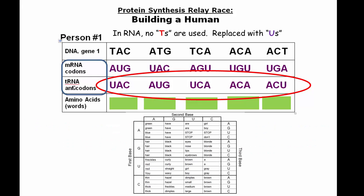Here's the anticodon chart — you'll get a little larger version of it. Basically what we want to do is take UAC and go down to the first base, which is a U, then down to the second base, which is an A, then down to the third one, which is a C. We get UAC, and it's going to be a U. Then AUG, AUG — R.